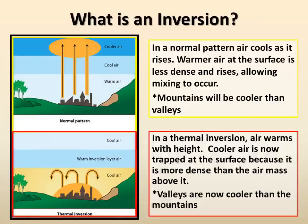When a thermal inversion occurs, cool air is trapped at the surface with a warm layer of air aloft. Since the cool air is more dense than the warmer air above it, mixing is inhibited. In these situations, it is typical for valleys to now be colder than mountain locations.